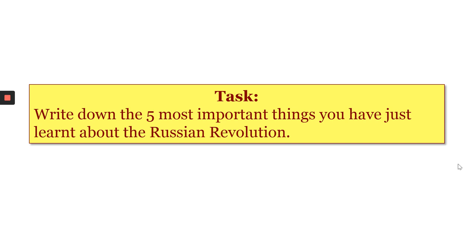What I want you to do now is have a think and write down the five most important things you have just learned about the Russian Revolution. You don't have to remember everything, and just after this you'll be watching another short video that will go over a few of these details again. But write down for now the five most important things that you can remember. Pause the video to give yourself some time to do this.